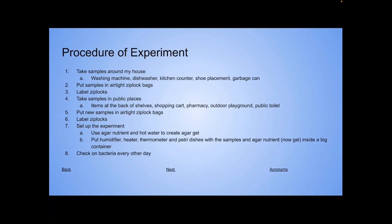Procedure. First, I took samples around my house. These samples were the washing machine, dishwasher, kitchen counter, shoe placement, and a garbage can. Then I put samples in an airtight Ziploc bag, and I labeled these Ziplocs. Next, I took samples in public places. These samples were at the back of items at the back of shelves, shopping carts, pharmacy, outdoor playground, and a public toilet. Next, I put these new samples in airtight bags. I then labeled the Ziplocs.